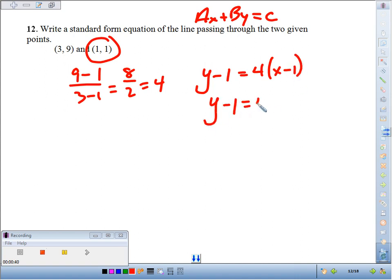If I distribute, I get 4X minus 4. And now when I fence post, I move the variables to the left, so I would subtract 4X on both sides.